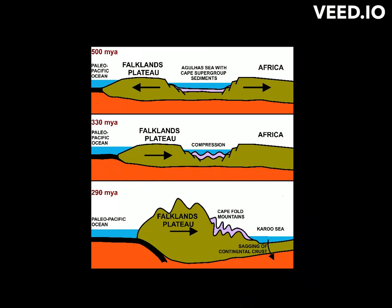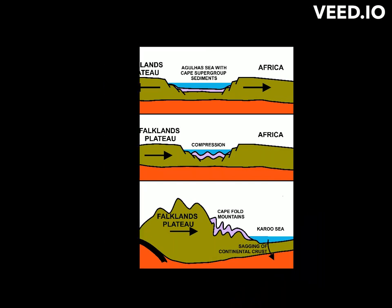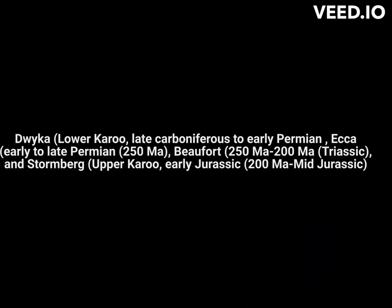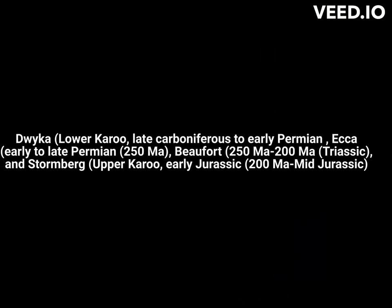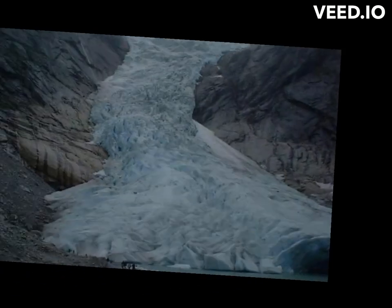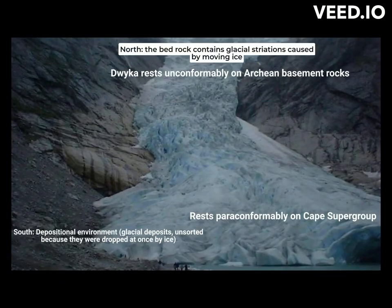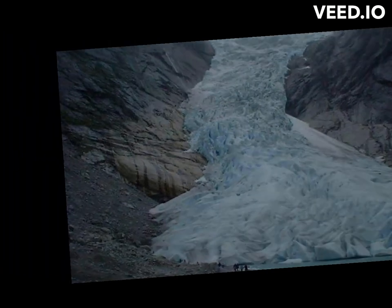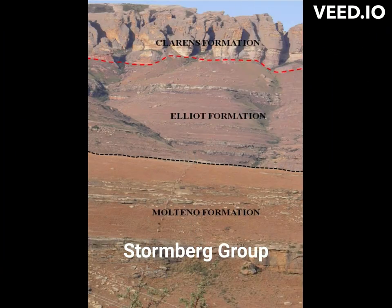The Karoo Supergroup is divided into four groups: Dwyka, Ecca, Beaufort, and Stormberg, respectively. These groups represent the change in Karoo paleo-environment from glaciation during Dwyka times all the way to desert conditions in the upper Karoo, called Stormberg.